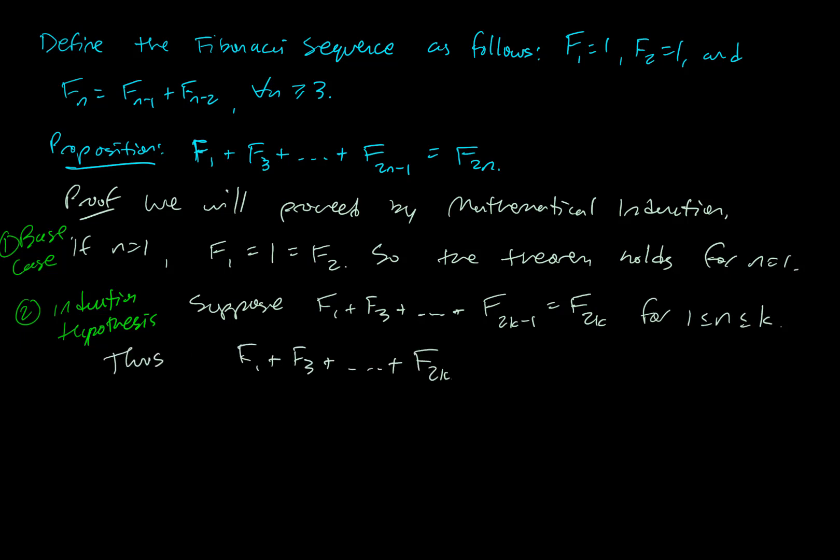I'm going to say thus F(1) + F(3) all the way up to F(2k-1) plus the next one, which would be F(2k+1) is F(2k) + F(2k+1), right? Because all I did, I took my equation earlier, and I just added the same term to both sides, so I still have equality.